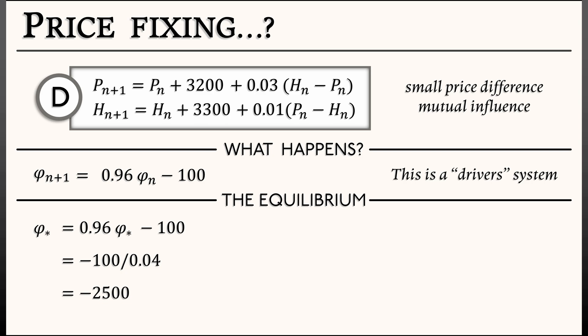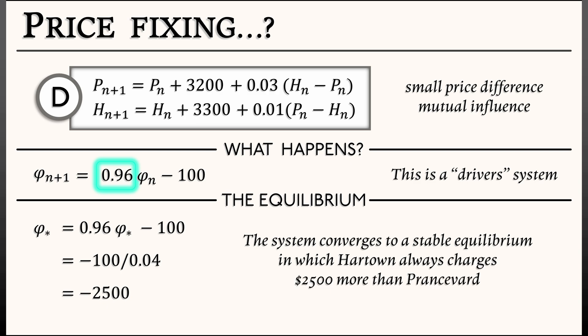So we have this one equilibrium. And what type of equilibrium is it? Well, look at the right-hand side. What's the coefficient of the linear term? 0.96. That's less than 1 in absolute value. This is a discrete time dynamical system. So this system converges to a stable equilibrium in which p minus h is negative 2,500.